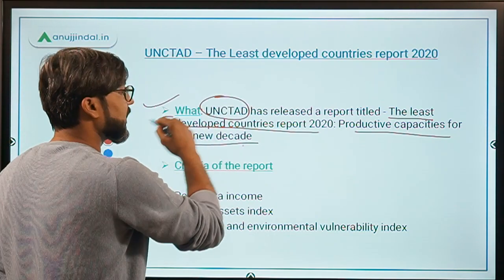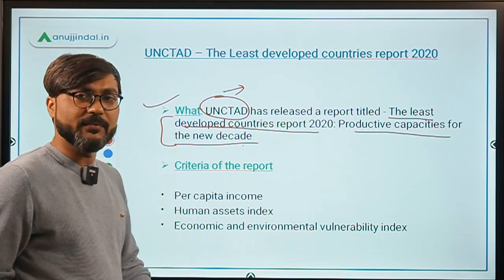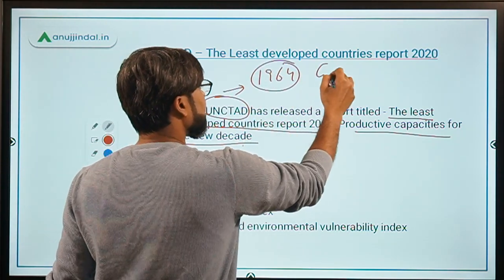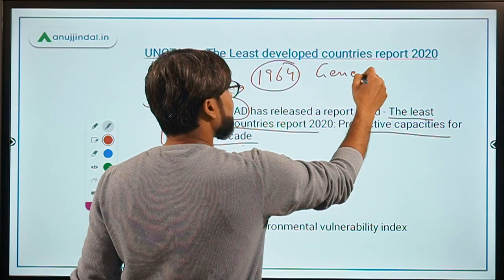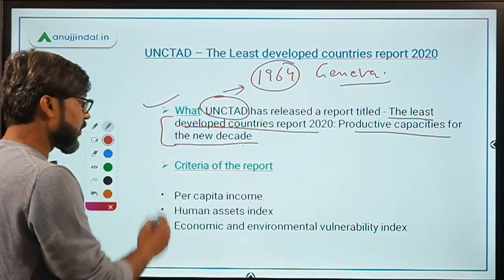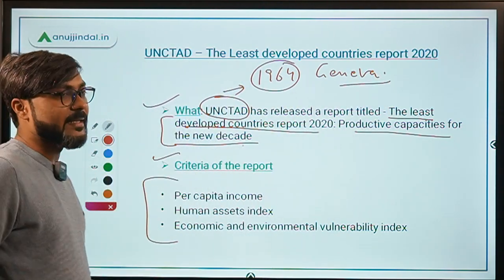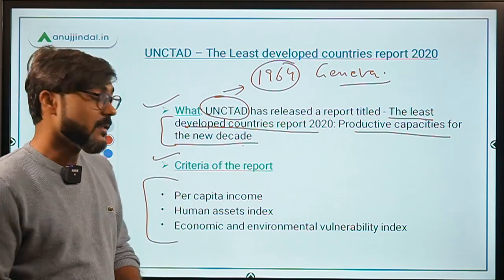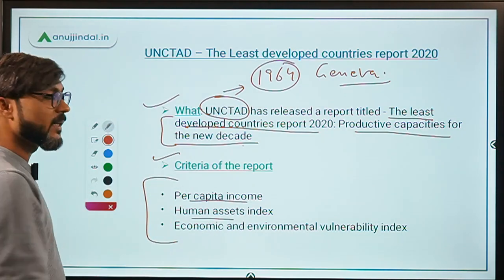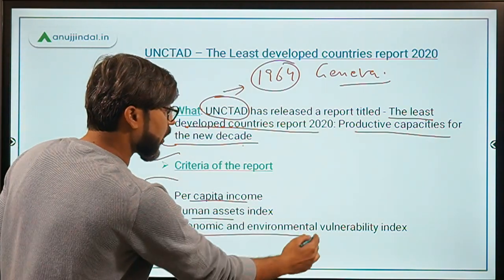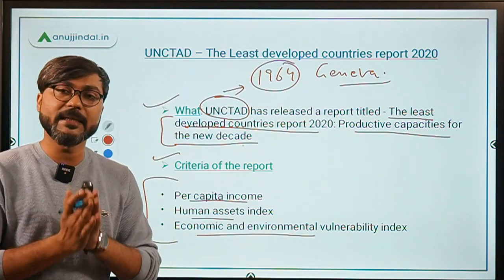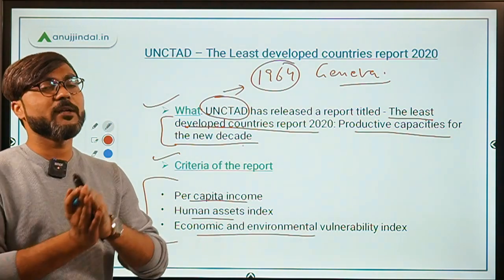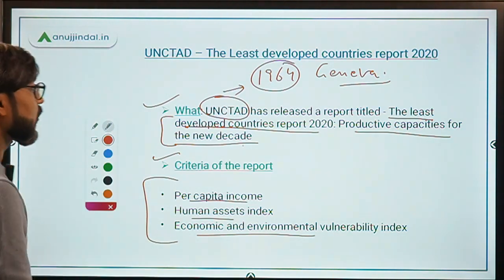This report has been released by UNCTAD — the United Nations Conference on Trade and Development — established in 1964 and headquartered in Geneva. The report is based on three criteria: per capita income, the Human Assets Index, and the Economic and Environmental Vulnerability Index.